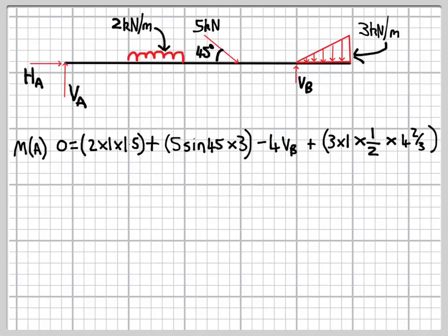So that's what all the numbers mean. If we work that through, then we find that the reaction force of B is 5.2 kilonewtons acting upwards. So that's probably the hardest equation we need to solve.